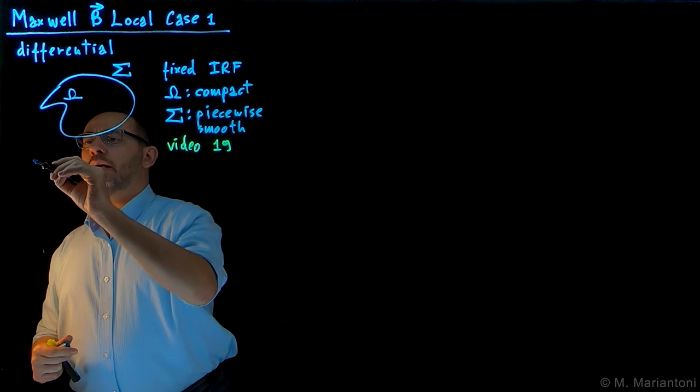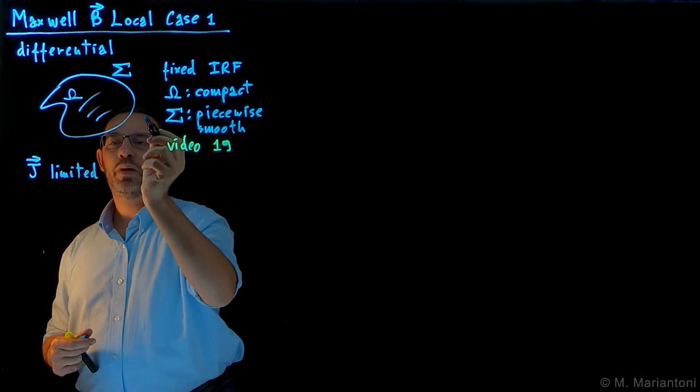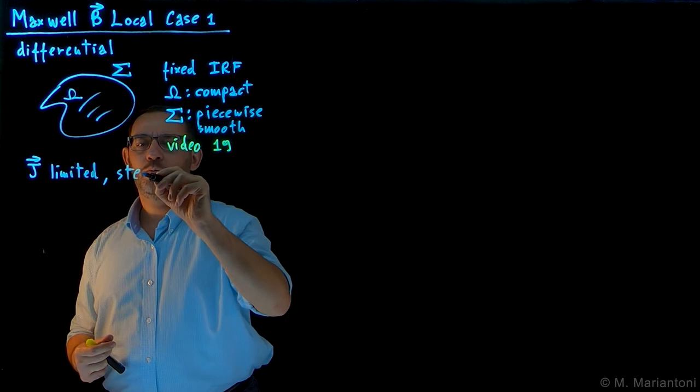In addition, let us hypothesize that in this region of space, there is a current density vector J. This current is limited, occupies a finite region of space within capital Omega and is also a steady current, or a DC current if you want.